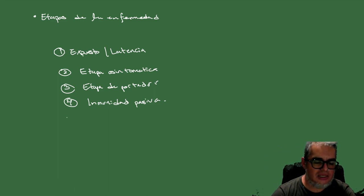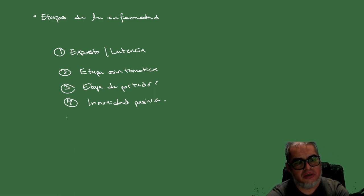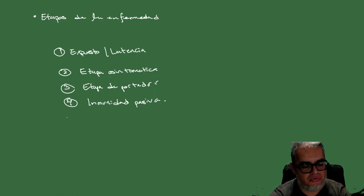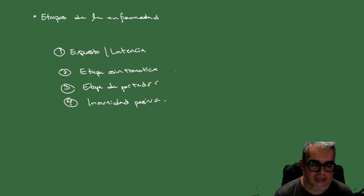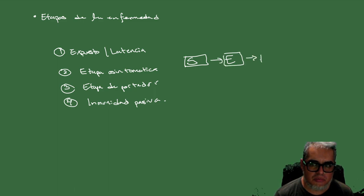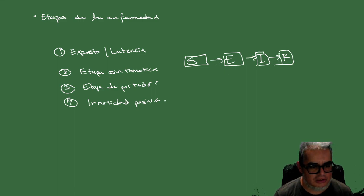Para el modelo SIS y el SIR supusimos que no nos importaba demasiado la etapa de latencia porque era suficientemente rápida. La vez pasada hicimos el análisis del SEIR, ¿no? Que es: tenemos susceptibles, esos susceptibles se vuelven expuestos, los expuestos pueden volverse infecciosos en algún momento, y luego los removidos. Hicimos las ecuaciones correspondientes de este modelo.